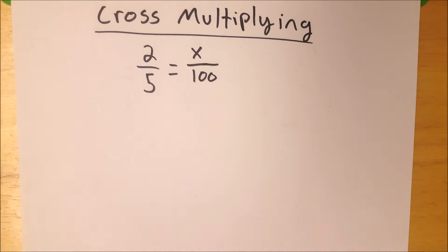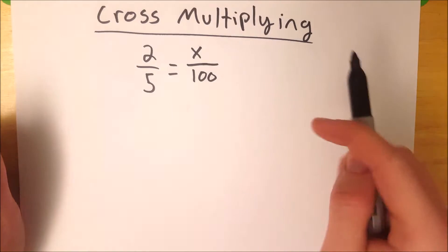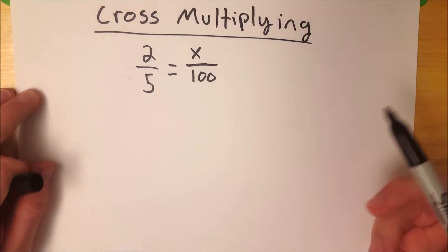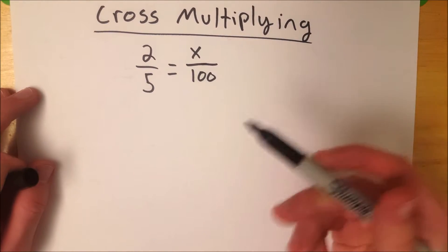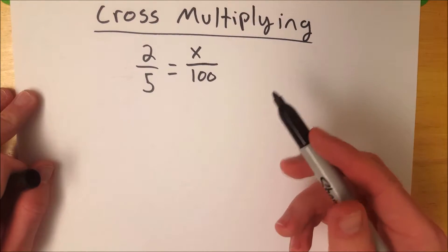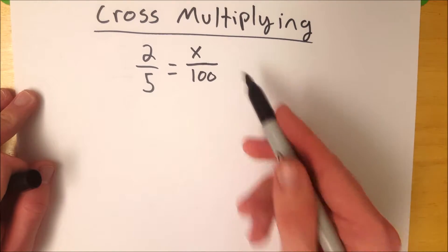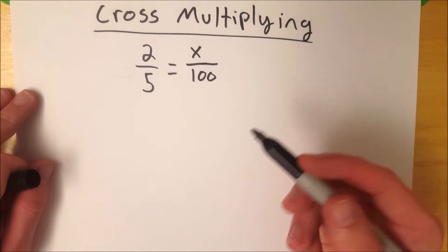Hello everyone, welcome to Wrath of Math. I'm your host, Sean Ian. In today's video, we're talking about cross-multiplying — what is it, and how can you do it? Cross-multiplying is basically the shortcut way of thinking about how to solve a proportion for a single variable.